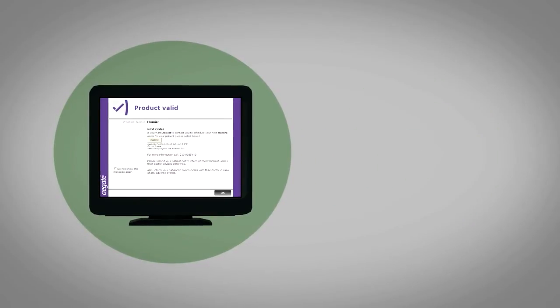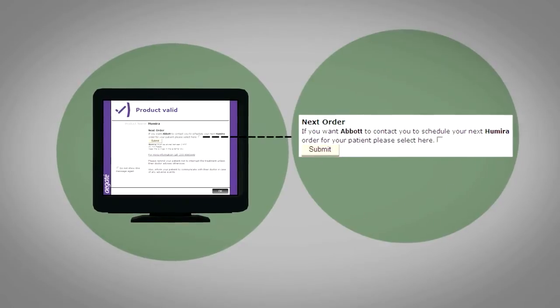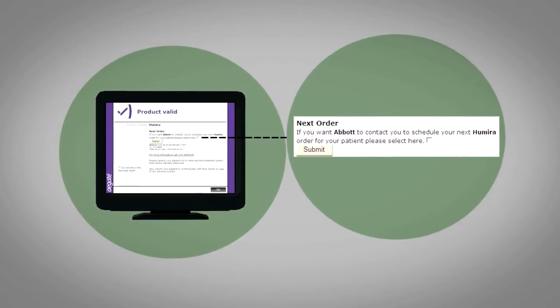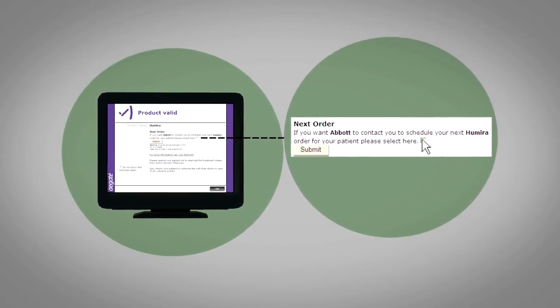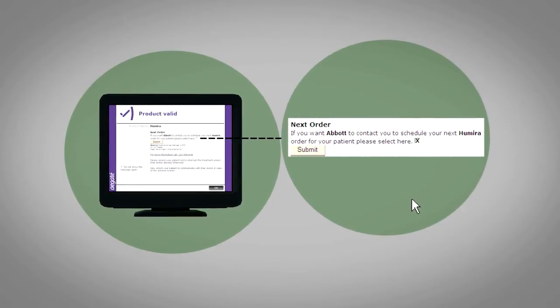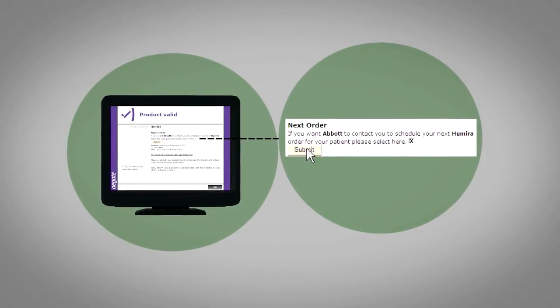Automatically, the following image appears on the computer's screen: 'If you want Abbott to contact you to schedule next Humira order for your patient, please select here.' Now see what you get if you click the special button and submit your application.